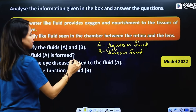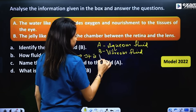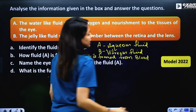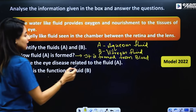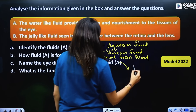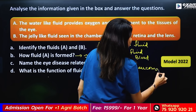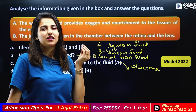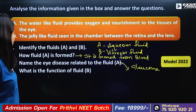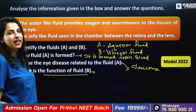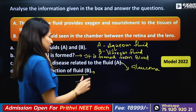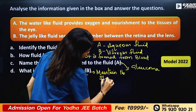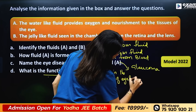How is fluid A formed? Aqueous fluid — how is it formed? It is formed from blood. What condition results when drainage is blocked? This causes glaucoma. What is the function of fluid B, the vitreous fluid? It maintains the shape of the eyeball.